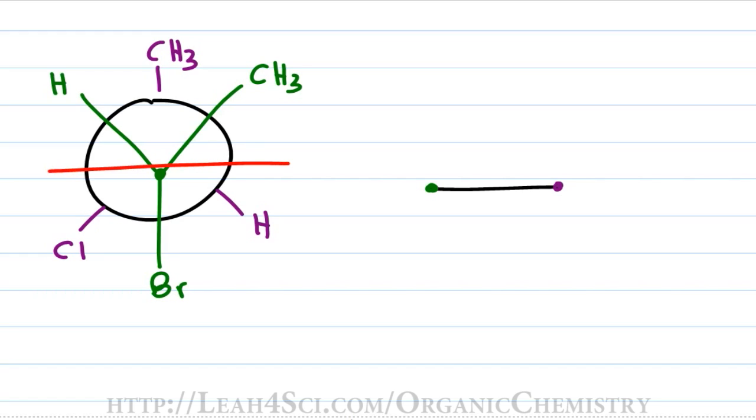Now we'll cut the Newman projection in half. Anything below this red line is going to be going downward. Anything above the red line is upward.